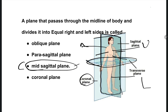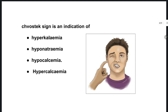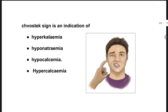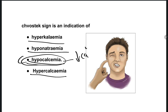The next question: Chvostek sign is a sign and indication of which condition? Options are: hyperkalemia, hyponatremia, hypocalcemia, hypercalcemia. The right one is option C, hypocalcemia — that is, reduced calcium in the blood. In this condition, we have the Chvostek sign positive.